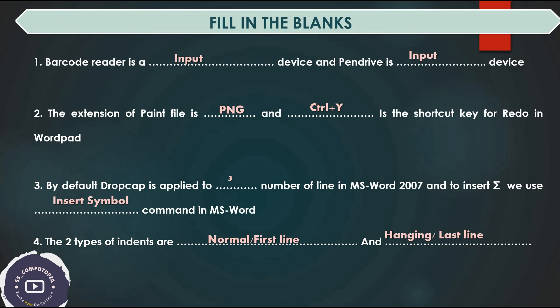Default drop cap applies to 3 lines in MS Word. To insert sigma in MS Word, use the Insert Symbol option — the command used is Insert > Symbol.